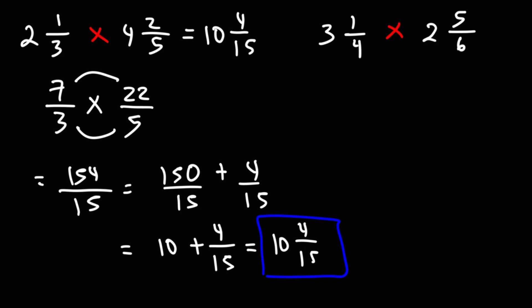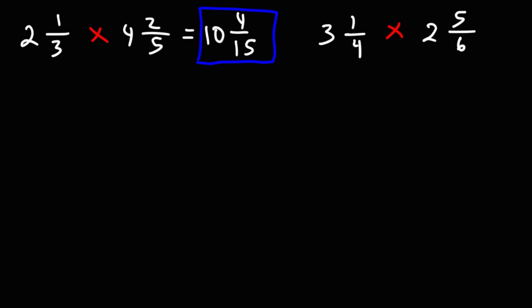So this is going to be our answer. So that's how you can multiply two mixed numbers together. First you want to convert each mixed number into an improper fraction, multiply across, and then reconvert the improper fraction to a mixed number. Let's do the same for the second example.